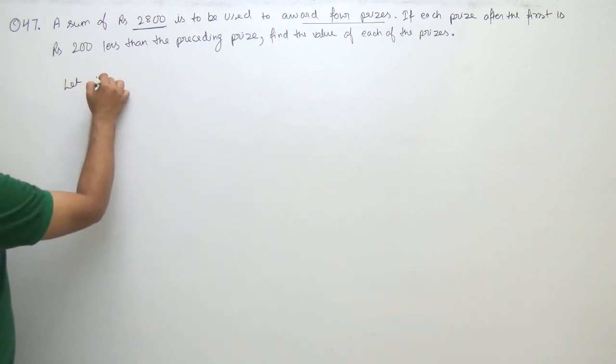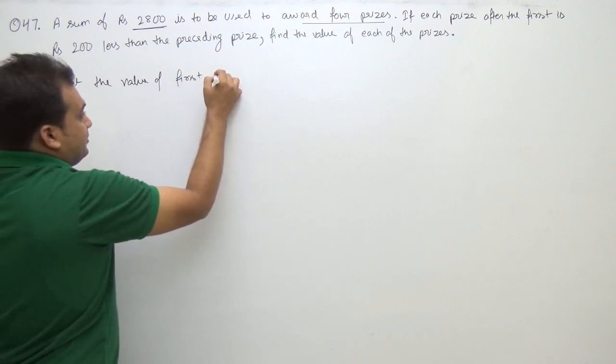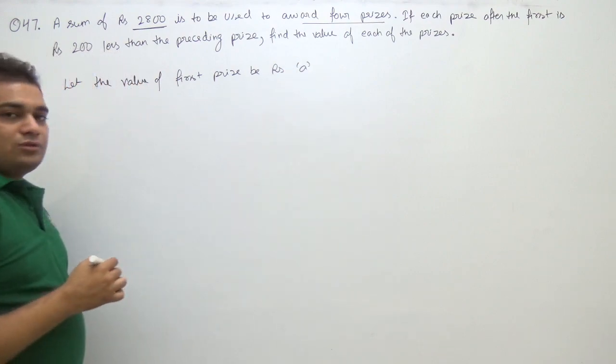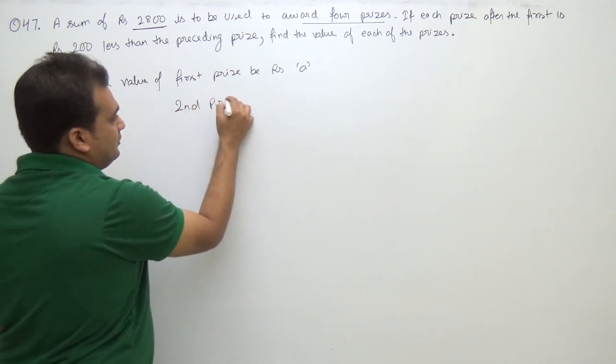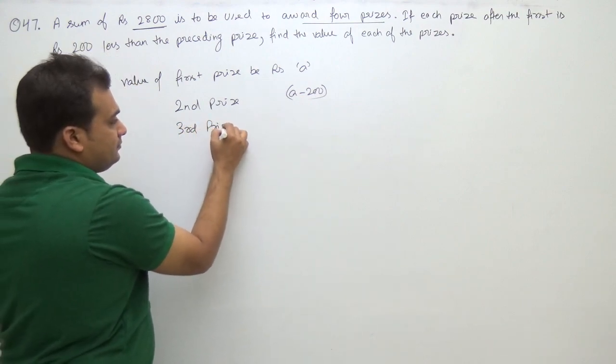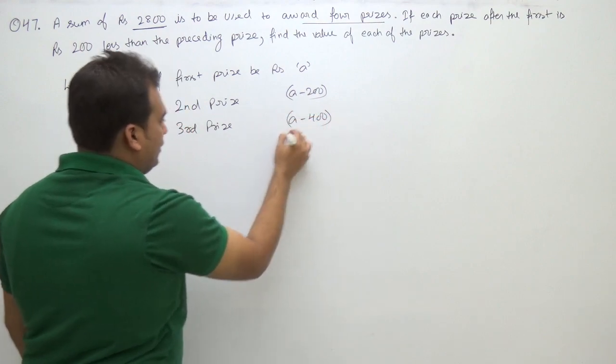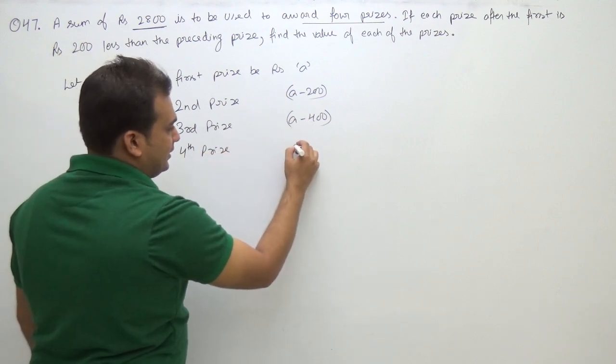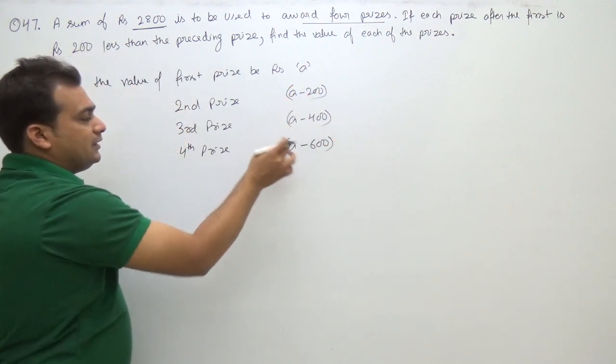Let the value of the first prize be A rupees. Then the value of the second prize is A minus 200, the third prize is A minus 400, and the fourth prize is A minus 600.